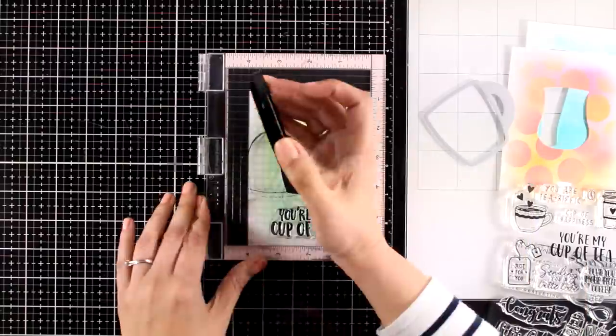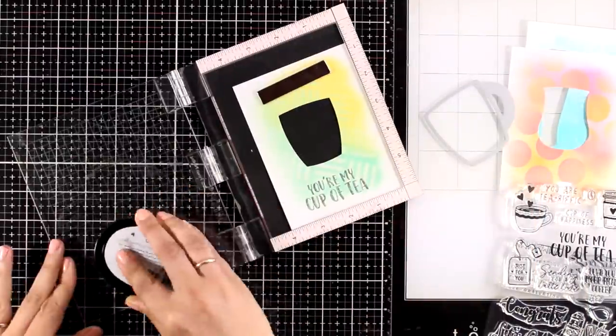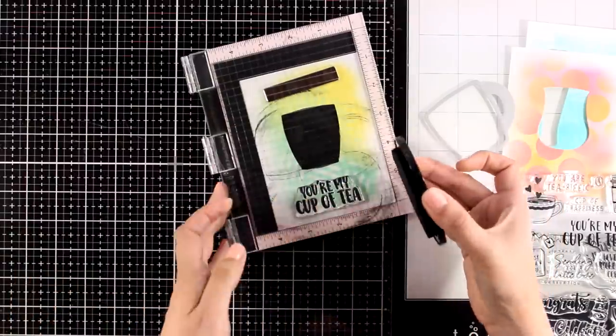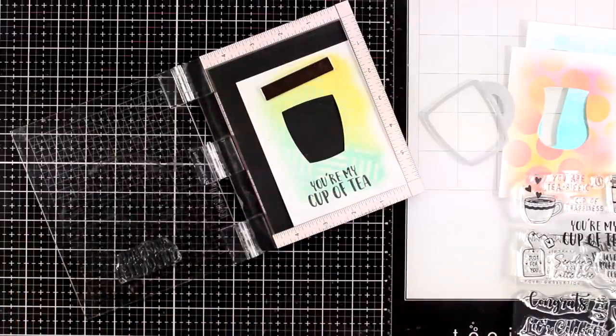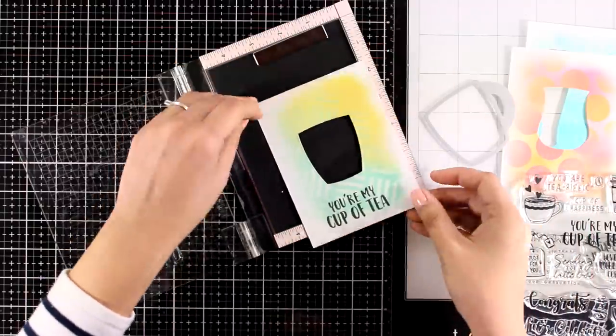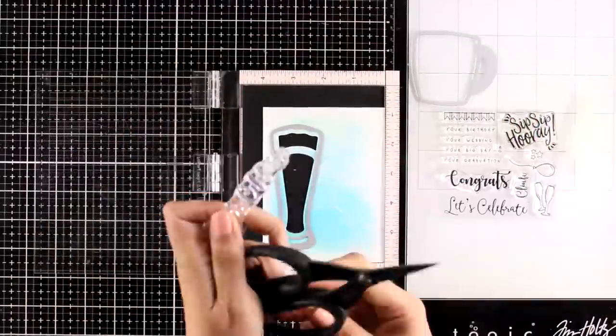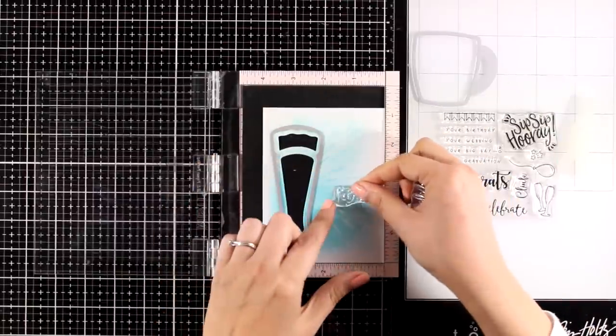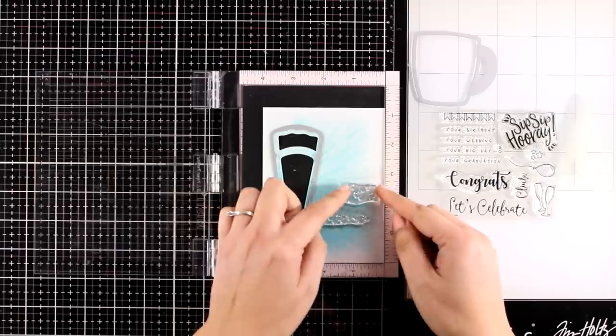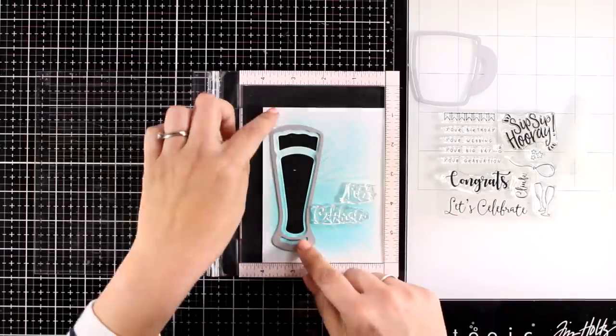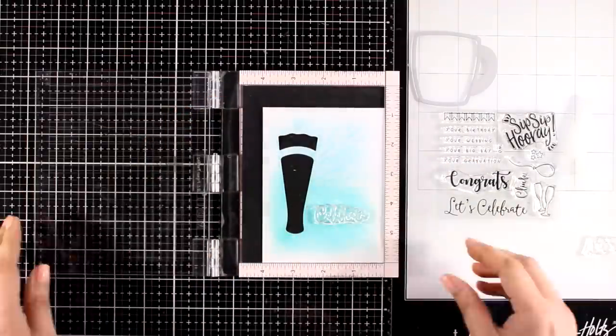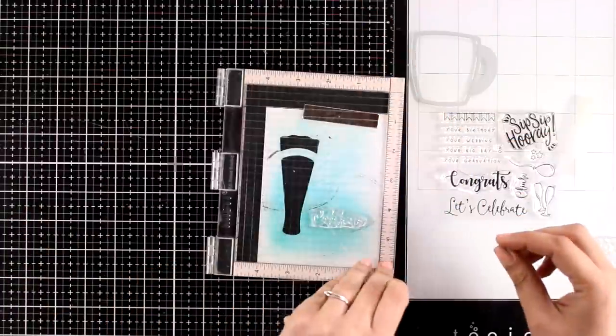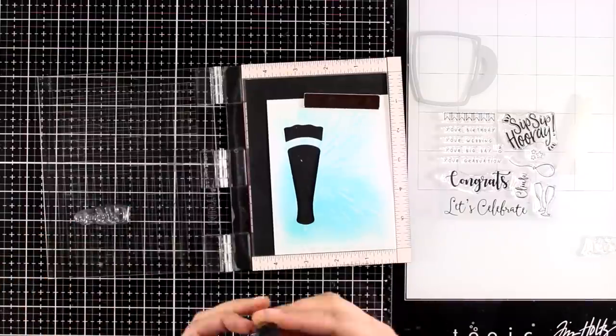Another way is to just die cut sentiments and stick them on top or to stamp your sentiments on a separate piece of paper and cut out thin strips of that and stick it on top of your card again. Now my ink pad needs re-inking so I will have to do that a couple of times to get a good impression. So for my small cocktail glass I went with sip sip hooray. This one is called coffee mug but it can easily be a tea cup so I'm going with you are my cup of tea.